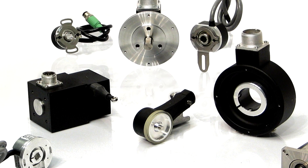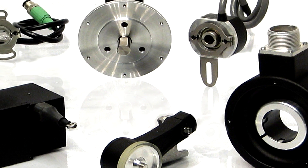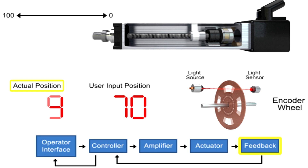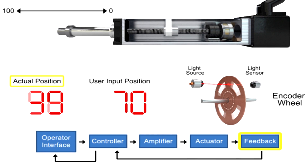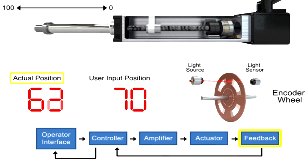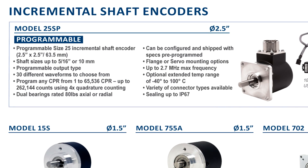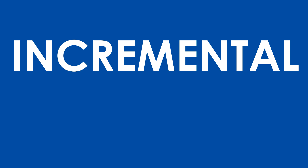What's an encoder? An encoder is an electromechanical feedback device that provides information about position, count, speed, and direction. Encoders produce signals that are received by a control device in order to perform a specific function. There are two main categories of encoders based on the type of position information they produce: incremental and absolute.